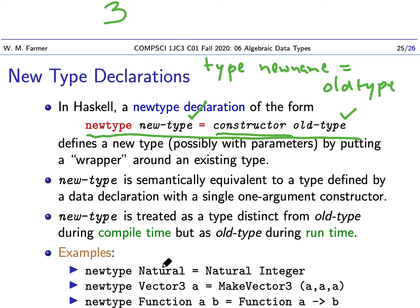It has, or natural, it has this construction, natural integer. And we use this new type, natural, whenever we want to talk about integers that are natural numbers. Similarly for vector 3a, whenever we want to think of a triple like this, not as just a triple, but as a vector, we could call it a vector 3 type. Same way with the function, whenever we want to think about this type as a member of, let's say, a function space, we could call it function a, b.